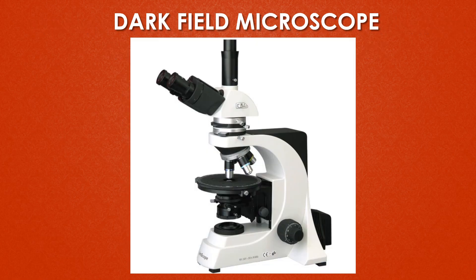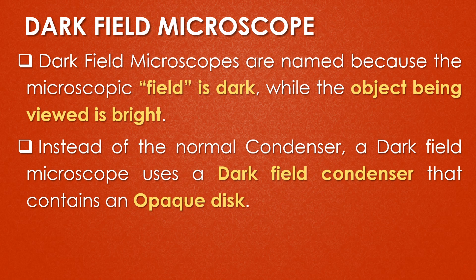This is the normal dark field microscope. The main difference is that instead of the normal condenser, the dark field microscope uses a dark field condenser which contains a disc called the opaque disc. The dark field microscopes are named because the microscopic field is dark while the object being viewed is bright — completely opposite to the bright field microscope. In the dark field microscope, a dark field condenser containing the opaque disc is present.